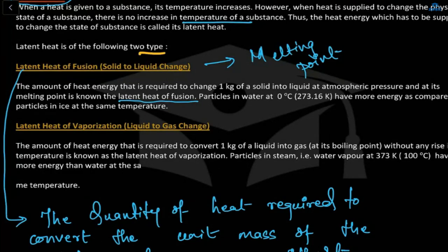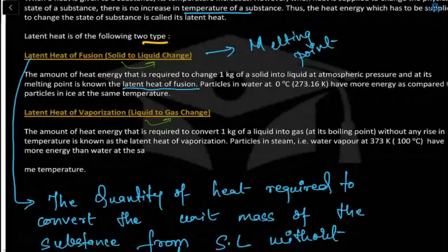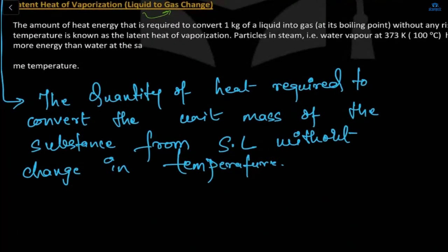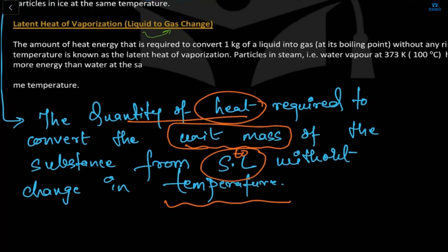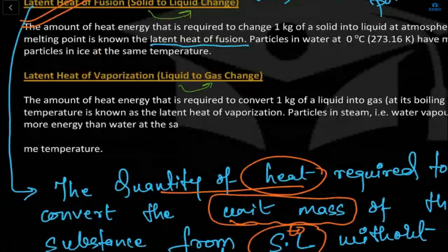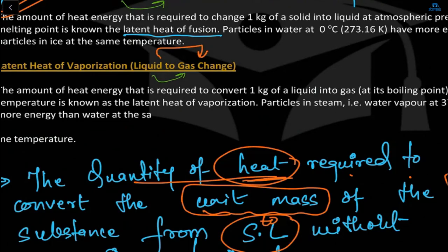There are two types of latent heat: first, latent heat of fusion, and second, latent heat of vaporization. Fusion means when solid changes into a liquid, and vaporization means when liquid changes into a gas. Latent heat of fusion is the quantity of heat required to convert a unit mass of the substance from solid to liquid without change in temperature. Similarly, latent heat of vaporization is the quantity of heat required to convert the unit mass from liquid to gas without changing temperature.